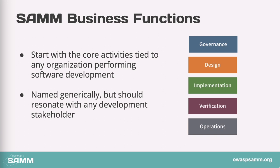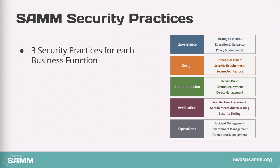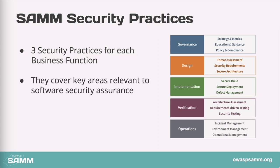We'll come back to each of these business functions in part two and look at them in detail. There are three practices under each business function, and the idea is for each of those practices to cover key areas relevant to software security assurance. Each of these is a silo — meaning the practices are decoupled enough that you can make improvements in one practice area without being required to make improvements elsewhere just to gain any benefit.